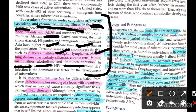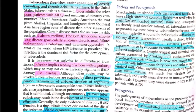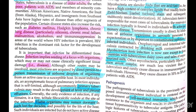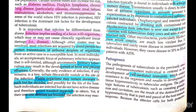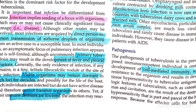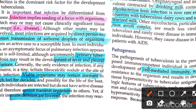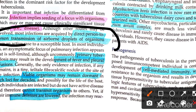TB transmission is direct, person-to-person, through airborne droplets. Close contacts of the body are exposed via respiratory droplets.